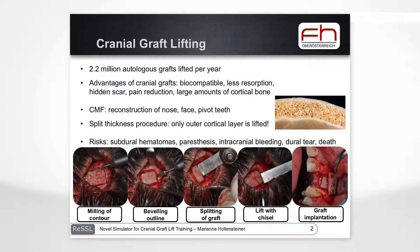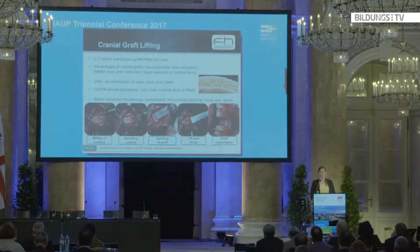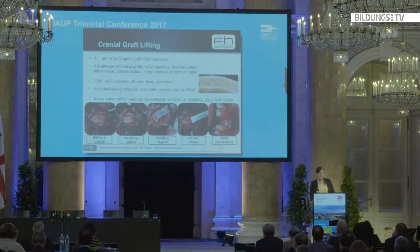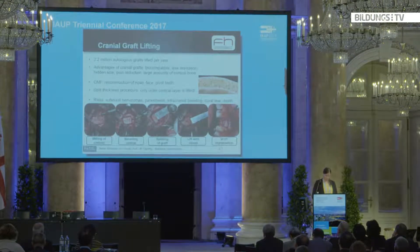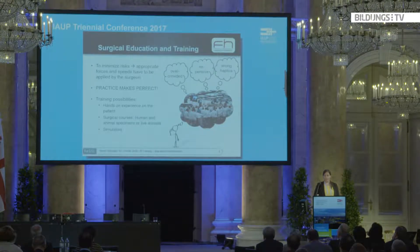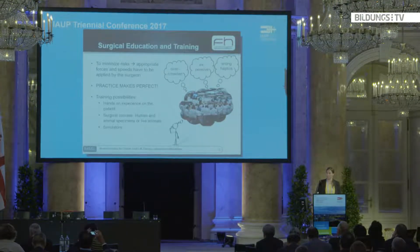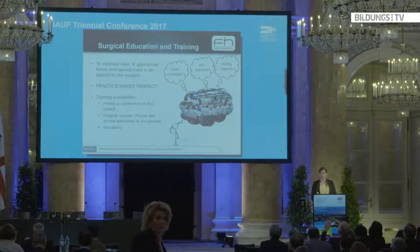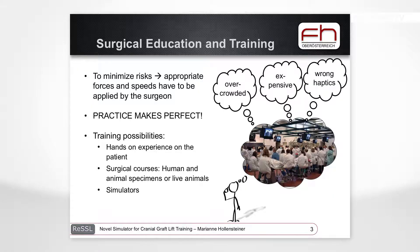Despite its advantages, the risk of penetrating the bone and entering the brain with these fast rotating and oscillating instruments is quite dangerous, leading to subdural hematoma, paresthesia, intracranial bleeding, dural tear, or even death of the patient. These fast surgical machines significantly reduce the haptic feeling between bone layers, which is the main thing a surgeon relies on during surgery. Due to the high speeds, bone breakdown is really fast, and thus fatal errors can happen very quickly. Appropriate forces and speeds must be used by the surgeon.